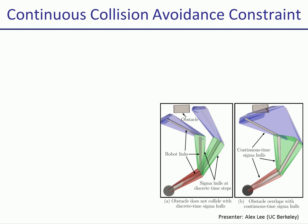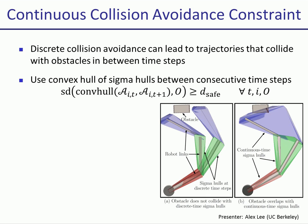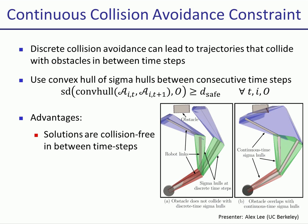The probabilistic collision avoidance constraint presented thus far doesn't take into account that the sigma hulls in between time steps might be colliding with obstacles. To deal with this, we can have a continuous collision avoidance constraint in a probabilistic sense. For this constraint, we construct the convex hull between sigma hulls of consecutive time steps and consider the signed distance between this convex hull and the obstacles to be greater than or equal to some safety distance, for sigma hulls of all links at all time steps and for all obstacles. The advantage of using this constraint is that solutions will be collision-free in between time steps, and the discretized trajectory can be discretized less finely.